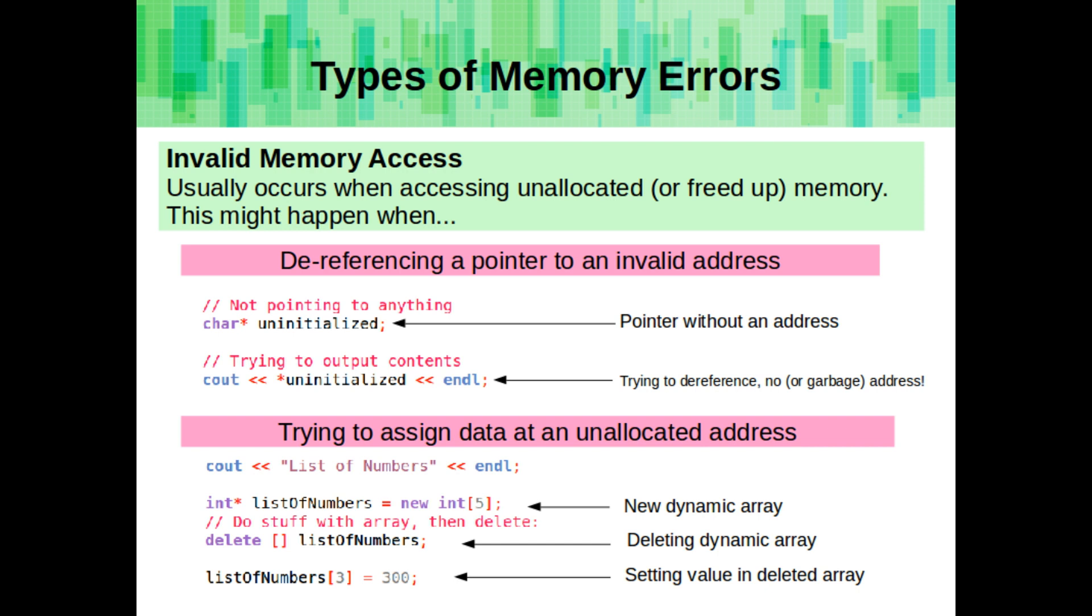Invalid memory access usually occurs when accessing unallocated or freed up memory. This might happen when dereferencing a pointer to an invalid address, or trying to assign data at an unallocated address.